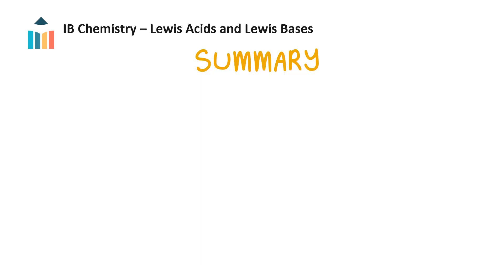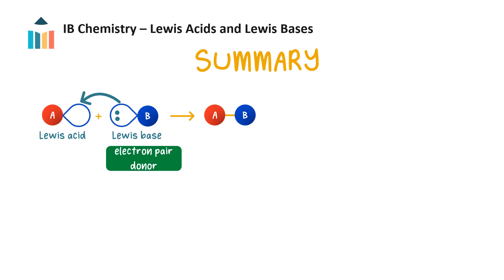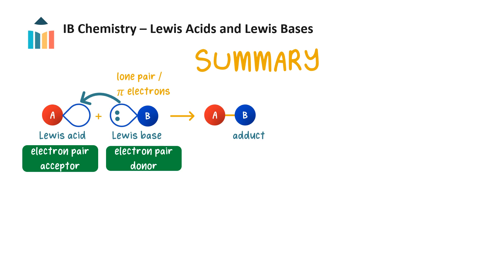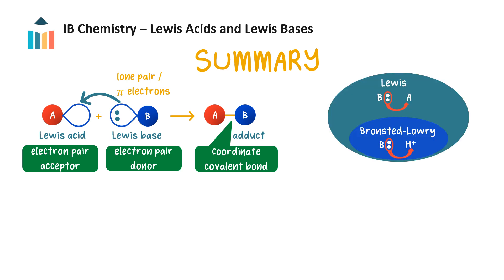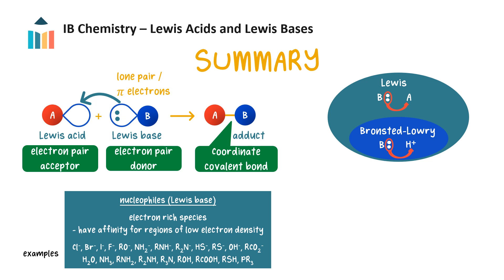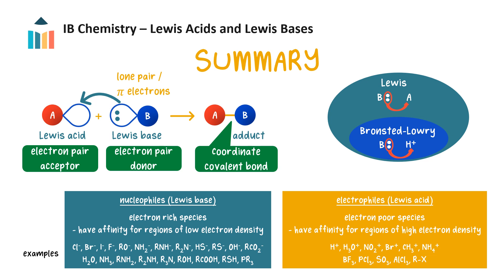Now let's summarize what we've learned. Lewis bases are electron-pair donors, including donation of lone pairs or pi electrons. Lewis acids are electron-pair acceptors. The product in a Lewis acid-base reaction is called an adduct and it possesses a coordinate covalent bond. All Bronsted-Lowry bases are also Lewis bases, but Lewis acids are not necessarily Bronsted-Lowry acids. In organic reactions, Lewis bases are electron-rich species called nucleophiles, and Lewis acids are electron-deficient species called electrophiles.